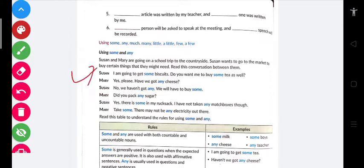Suzanne says 'I'm going to get some biscuits. Do you want to buy some tea as well?' Mary says 'Yes please, have you got any cheese?' Suzanne says 'No, we haven't got any, we'll have to buy some.' Mary asks 'Did you pack any sugar?' Suzanne says 'Yes, there is some in my rucksack. I have not taken any matchboxes though.' Mary says 'Take some, there may not be any electricity out there.'